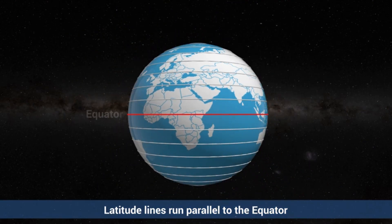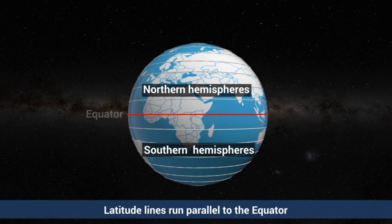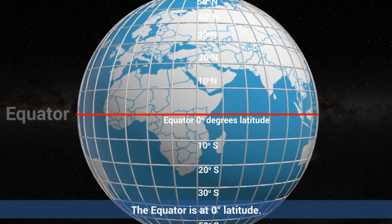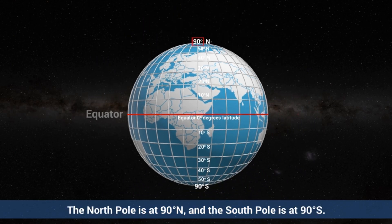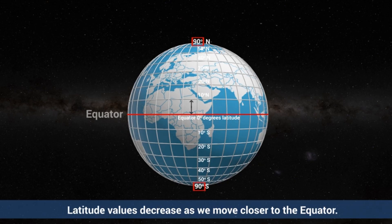Latitude lines run parallel to the equator, dividing the earth into northern and southern hemispheres. The equator is at 0 degrees latitude, while the north pole is at 90 degrees north and the south pole is at 90 degrees south. The closer a location is to the equator, the smaller its latitude value.